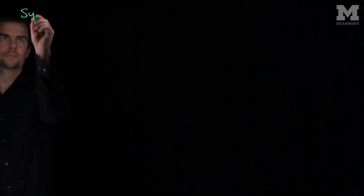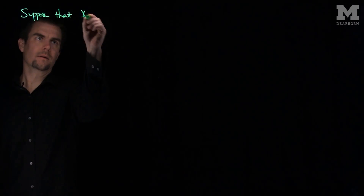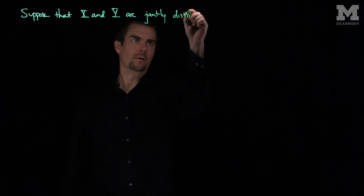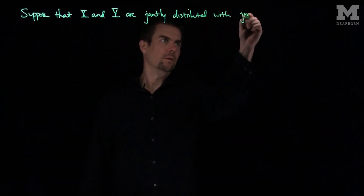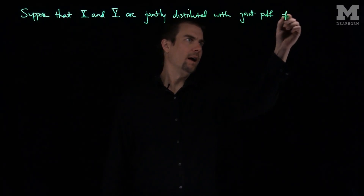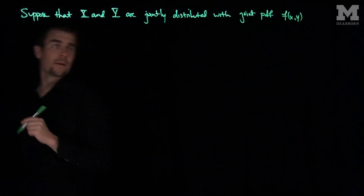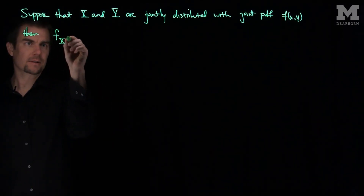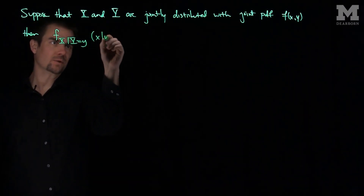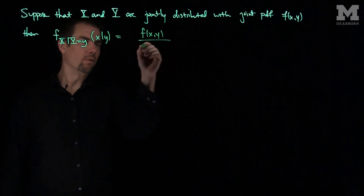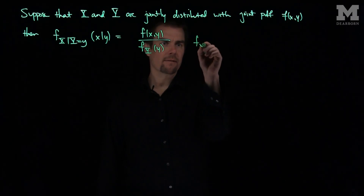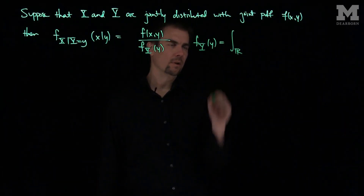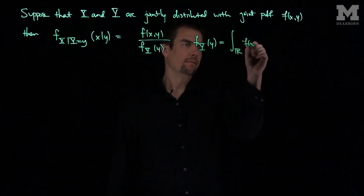Hello students. In this video we'll discuss the law of total expected value. Let's suppose that x and y are jointly distributed with joint pdf f. Then we can note that the conditional pdf f of x given y equals little y is given by the formula: it's the joint pdf over the marginal pdf, where fy of y is the integral over the entire real line of f dx.